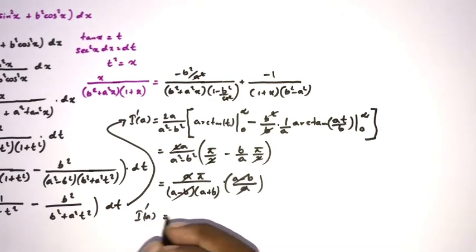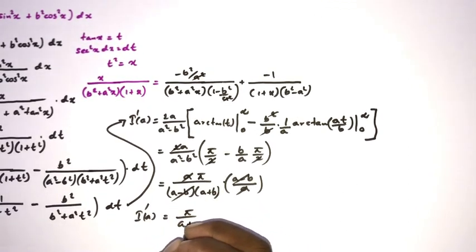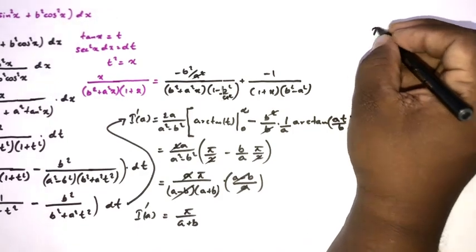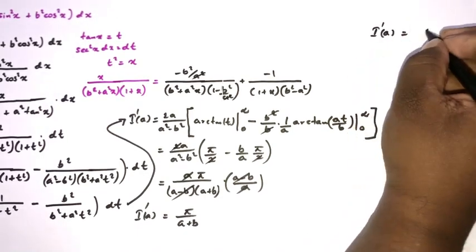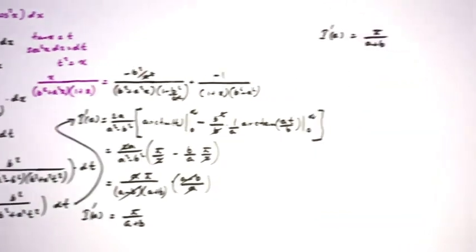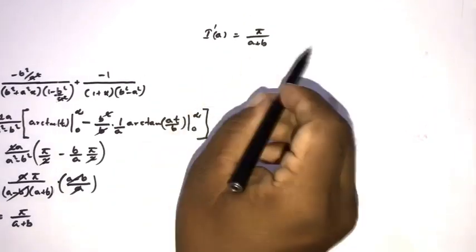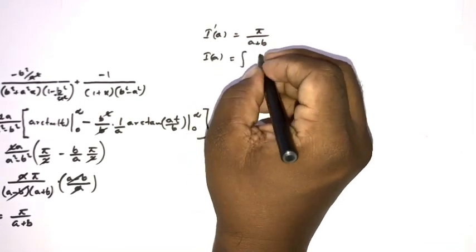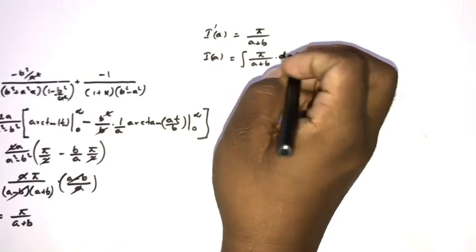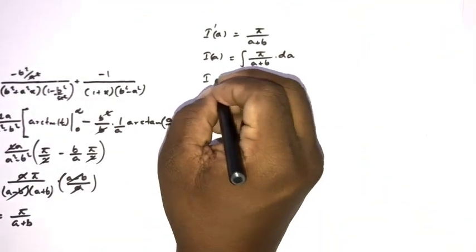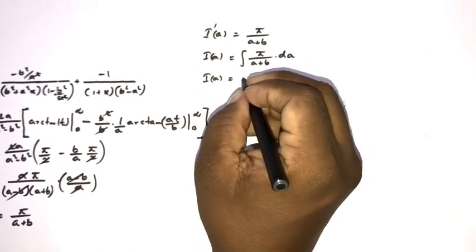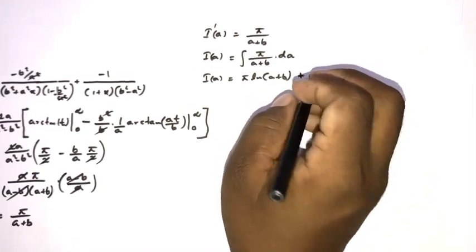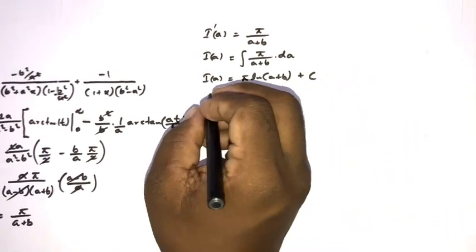So I'(a) = π/(a + b). Integrating both sides with respect to a gives I(a) = π·ln(a + b) + C, since π is a constant and ∫1/(a + b) da = ln(a + b).